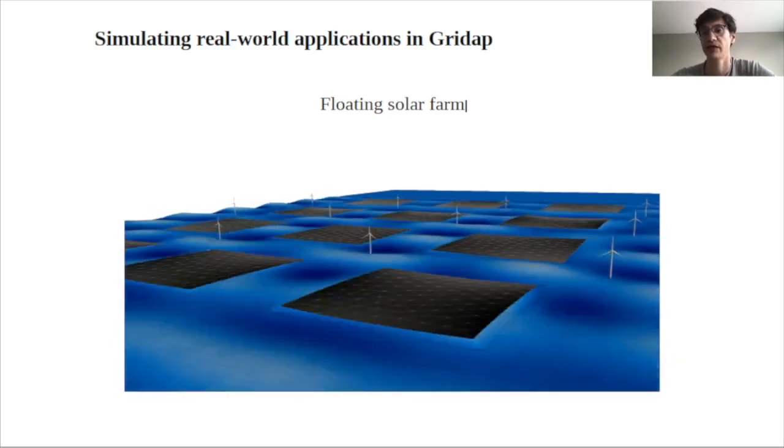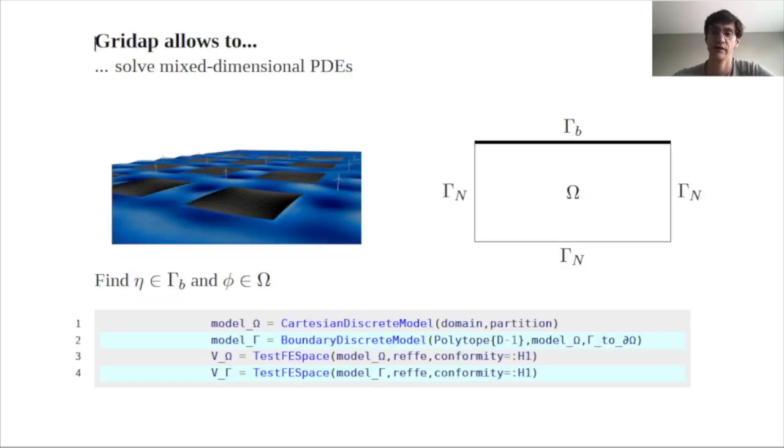In this type of applications, we face several challenges. One of them is that we have a mixed-dimensional PDE. Okay, so here we have a variable that is defined in a two-dimensional domain coupled with another variable that's only defined in a one-dimensional domain, a part of the boundary. GridApp offers the possibilities to solve these kinds of problems by providing this boundary discrete model that constructs a discrete model on a part of the boundary of the domain.